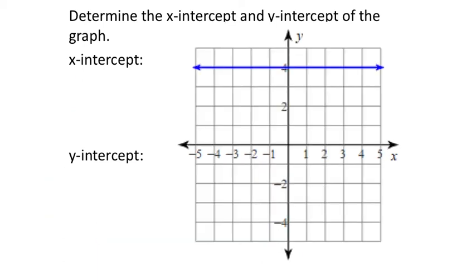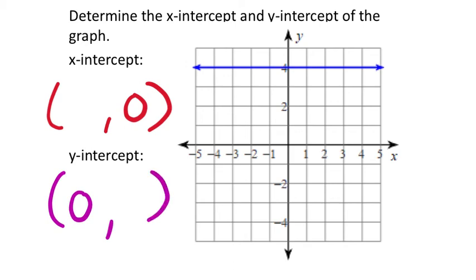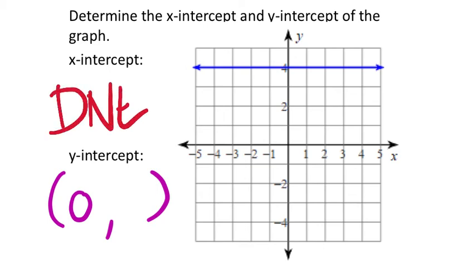What about a straight horizontal line? For the x-intercept, the y value is 0; for the y-intercept, the x value is 0. This line is parallel with the x-axis — they will never meet — so there is no x-intercept, and we write DNE, meaning does not exist. For the y-intercept, the line crosses the y-axis at y equals 4, so it's (0, 4).